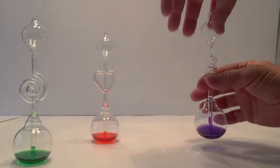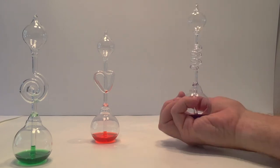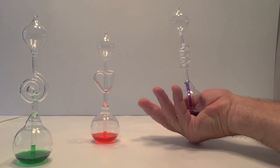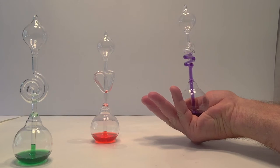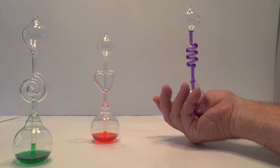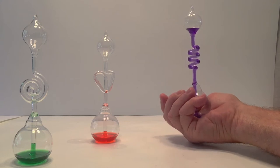You've got different designs and different colors, and you can order what you want. The procedure is basically just grabbing the hand boiler and putting it in your palm without tightly grabbing it. Just put it in your palm, you don't have to squeeze it, and the liquid will start going up to the top.